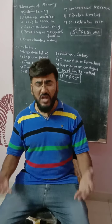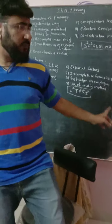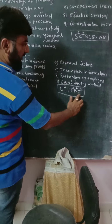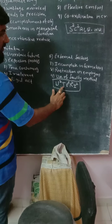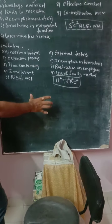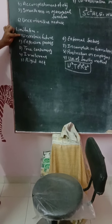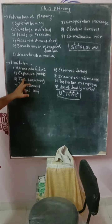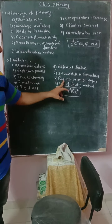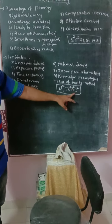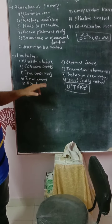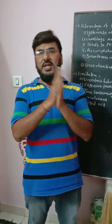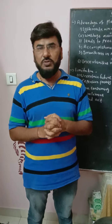I hope you understood. The keyword for limitations is TERI U² — T: time consuming; E: expensive and external factors (two times); R: rigidity; I: incomplete information and irrelevant (two times); U²: uncertain future and use of faulty methods. I hope you understood the question on advantages and limitations of planning. Thank you very much.